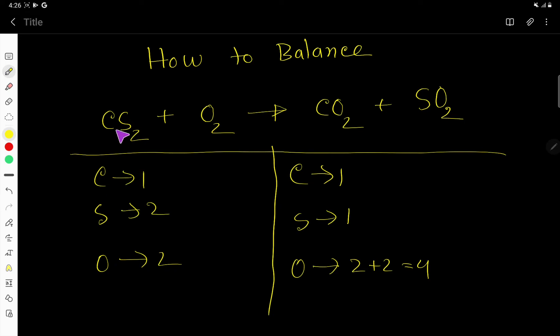You have to first balance the atom that is present in one compound. So here carbon is present in one compound on the left-hand side. So here 1, here 1. So carbon is already balanced.